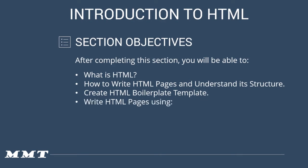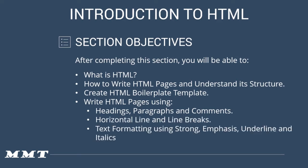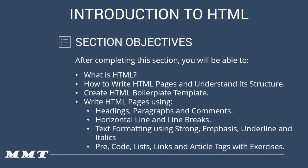Then we'll understand how to write HTML pages using headings, paragraphs, comments, horizontal lines, line breaks, and text formatting using strong, emphasis, underline, and italics. Then we'll use HTML tags like pre, code, list, links, and article tags with exercises. We're going to do a lot of exercises and create web pages using all these tags, and understand how a web page is built using HTML tags.